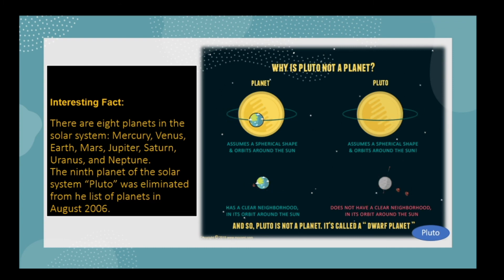Why is Pluto not a planet? Because it does not show a clear orbit around the Sun, so it is often called a dwarf planet. So here we have completed the topic.